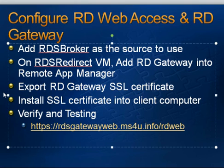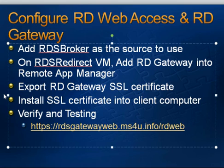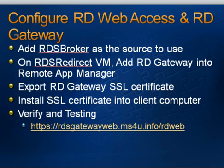The next thing you need to do is export the RD Gateway SSL certificate from the RD Gateway, and then import it to all the client computers that are going to connect to the VDI. In order to access via web access, you can key in this URL: https://rdsgateway.ms4u.info/rdweb.